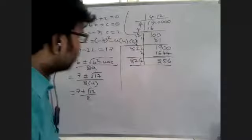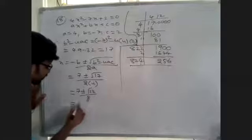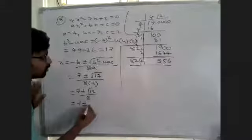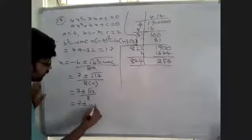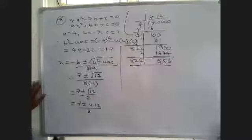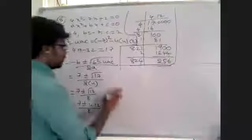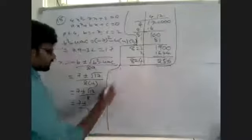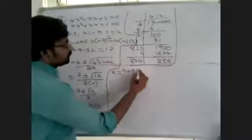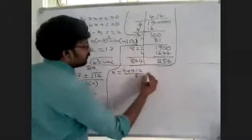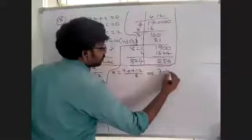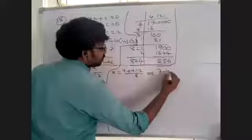Now in place of root 17 I am writing: x equals 7 plus 4.12 or minus 4.12, all divided by 8. Splitting this, we get one value x equals 7 plus 4.12 by 8, or another value x equals 7 minus 4.12 by 8.